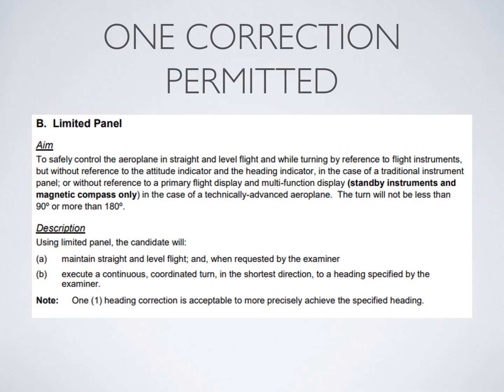One thing to point out: the flight test guide does say you are permitted one heading correction. However, this is for precision errors — not for turning in the completely wrong direction. If you turn the wrong way, you could have failed that item. But if you've over-banked, under-banked, or miscalculated your rollout and you're outside the 15-degree limit, you are permitted one correction to get back within that range and pass the item on your flight test.